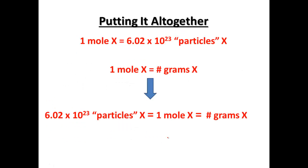To begin with, putting this all together, I would like you to move back to number 21 in your notes from section 10.2. This is the one we skipped before. Right above that one, we're going to start out: one mole of X equals 6.02 times 10 to the 23rd particles of it, or one mole of X equals that number of grams of X from the periodic table.